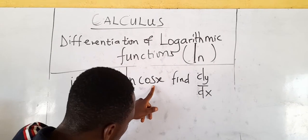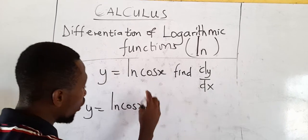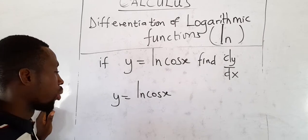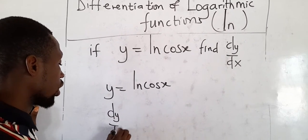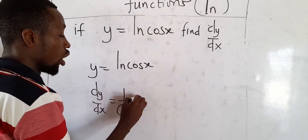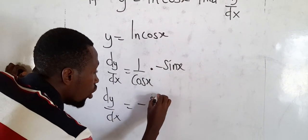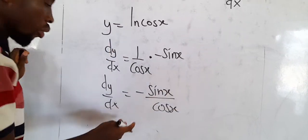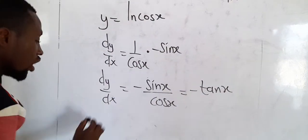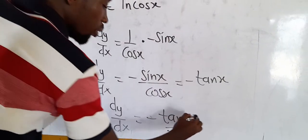Next: y = ln(cos x), find dy/dx. The secret: reciprocate the function and differentiate and use it to multiply. Reciprocate cos x (it's over 1) to get 1/cos x. Now differentiate cos x to get −sin x, and use it to multiply. So dy/dx = −sin x / cos x. Since sin x / cos x = tan x, we have dy/dx = −tan x. This is the gradient function.